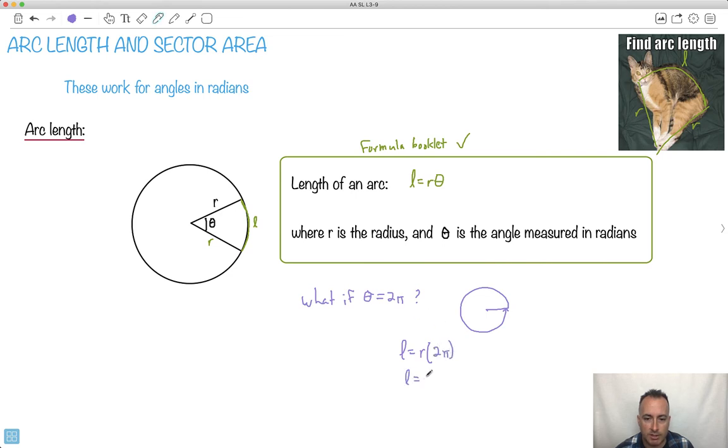Well, guess what? That means your length would be 2 pi R. Doesn't that look like the, isn't that the circumference? So look, we recover the circumference equation. That circumference of a circle is 2 pi R. Yay.